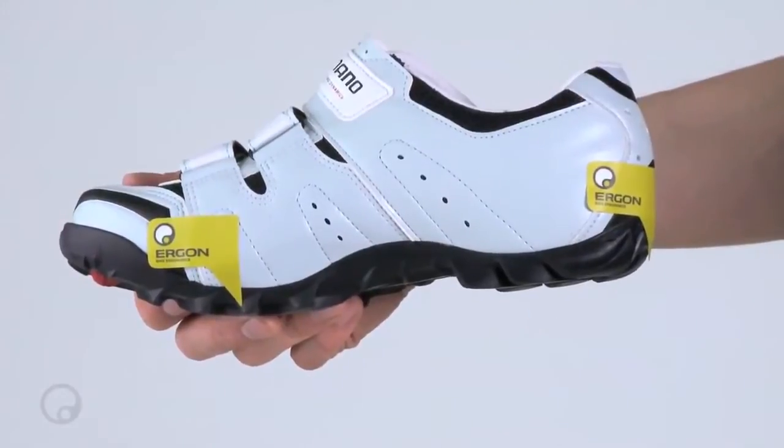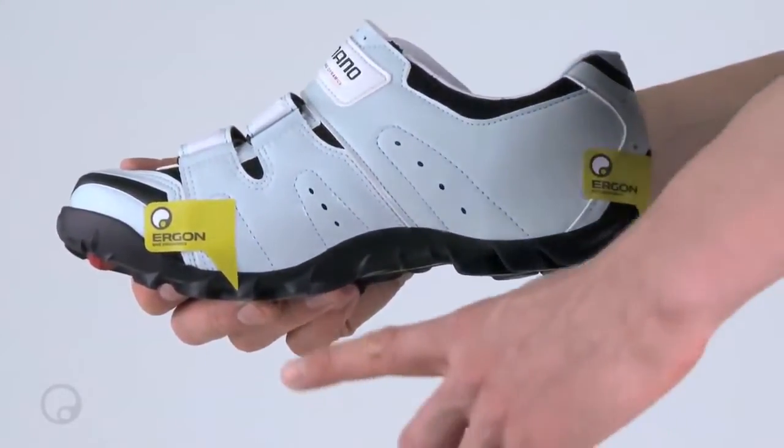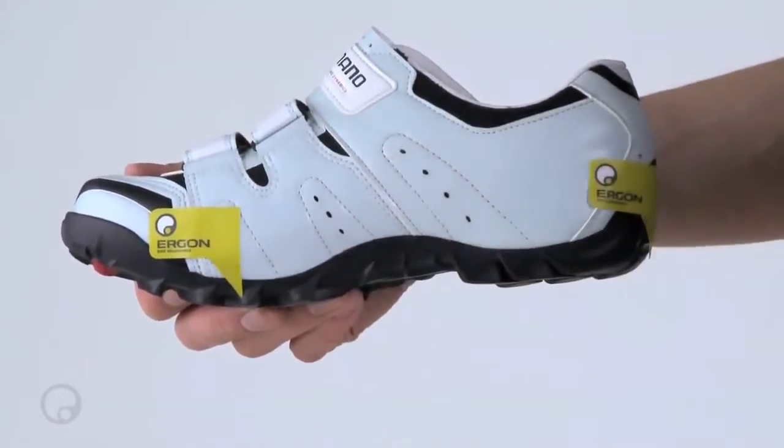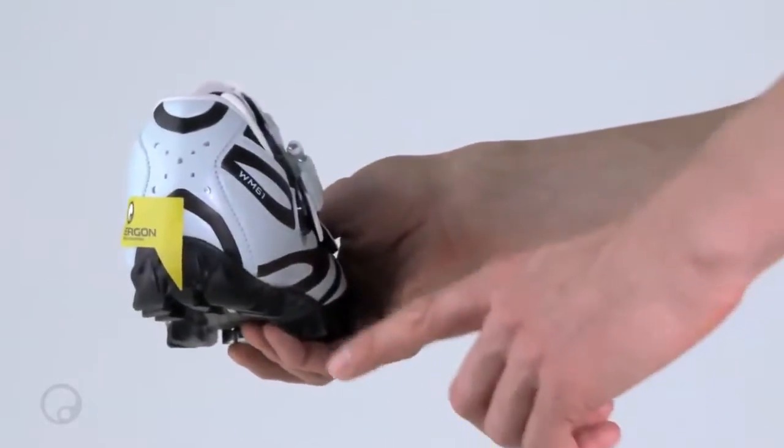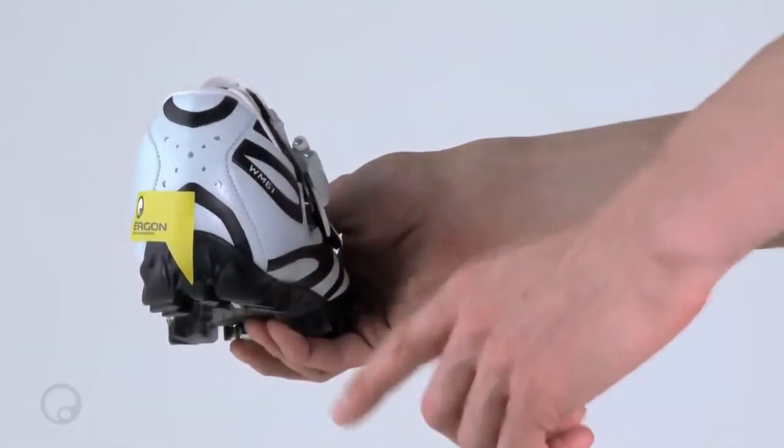First, you need to locate two positions on the shoe: your big toe joint axis and the centerline of the shoe. The handbook guides you through this. Apply the stickers in each of these positions.